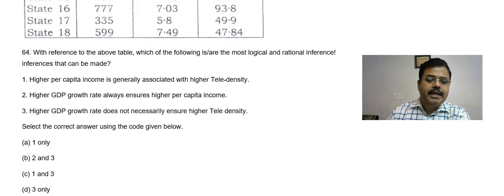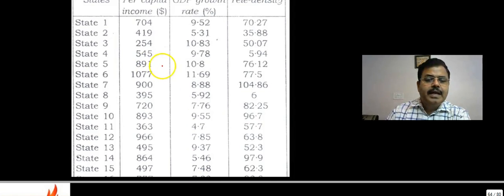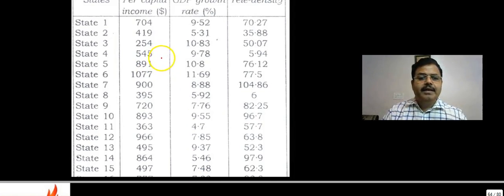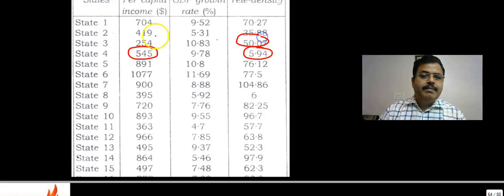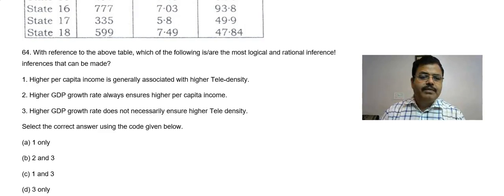Higher per capita income, higher tele-density? Per capita income is here, this is 545, but tele-density is just 5.94. This is not true here. Although the high tele-density is there, per capita income is very less. So first one is incorrect.